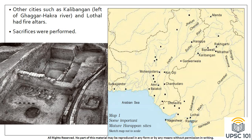Another important structure to note is the fire altars found in Kalibangan, which is on the banks of the river Saraswati — now called the Ghaggar-Hakra river — and also in Lothal, at the tip of the Gulf of Khambhat in Gujarat. Fire altars were places where the Harappans performed sacrifices. Note that while this sounds similar to Parsi fire worship, the two communities had no relation to each other whatsoever.